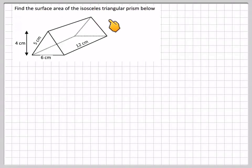Find the surface area of the isosceles triangular prism below. So here we have a prism that has the same cross-sectional area throughout.